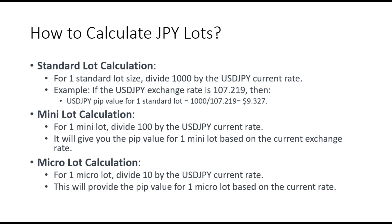For a standard lot calculation: if you have a USD/JPY exchange rate of 107.219, you divide 1000 by that exchange rate to get the pip value in dollars. The same applies for a mini lot and a micro lot. To calculate Japanese yen pip values, it's a very simple formula as I've shown you in this video. I hope Adam that you will use this in your trading to calculate your lot size.